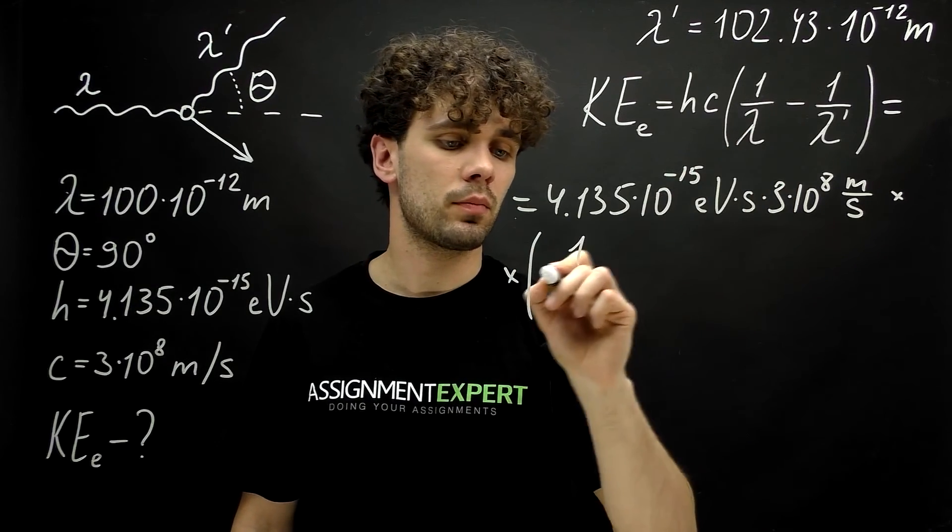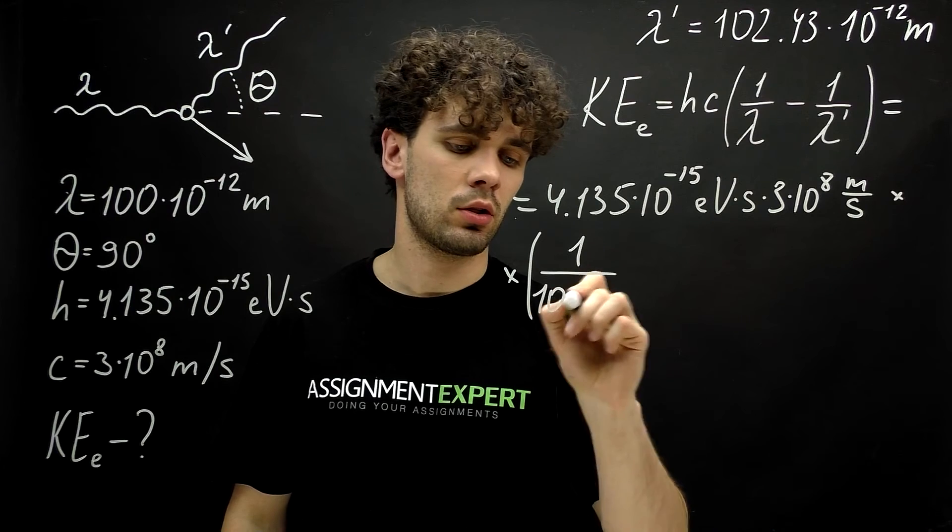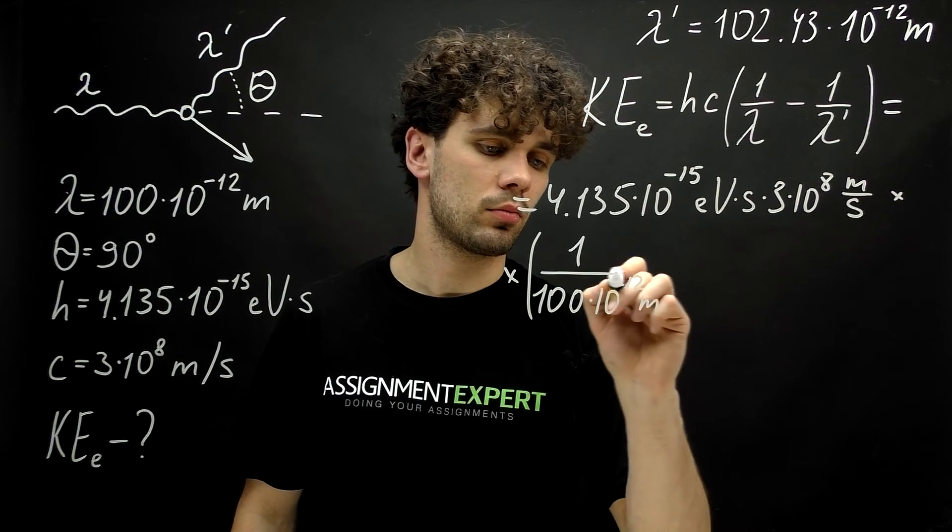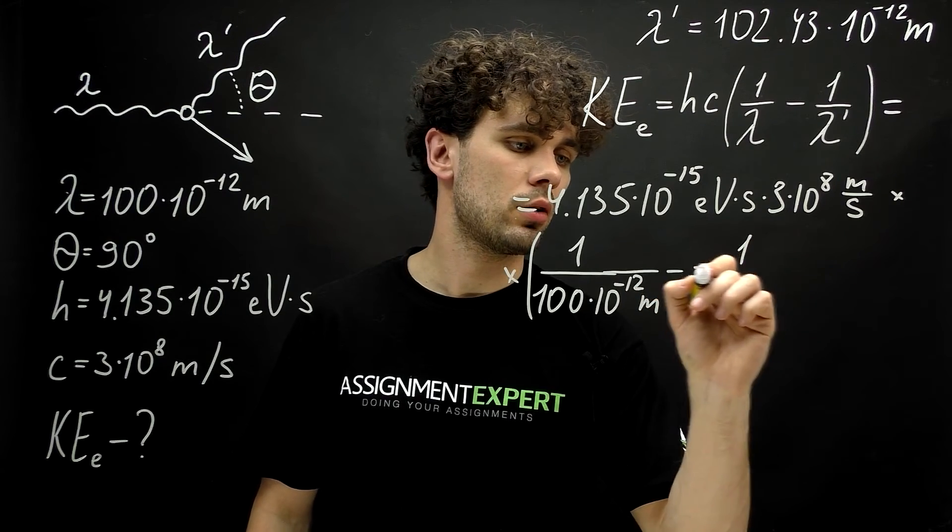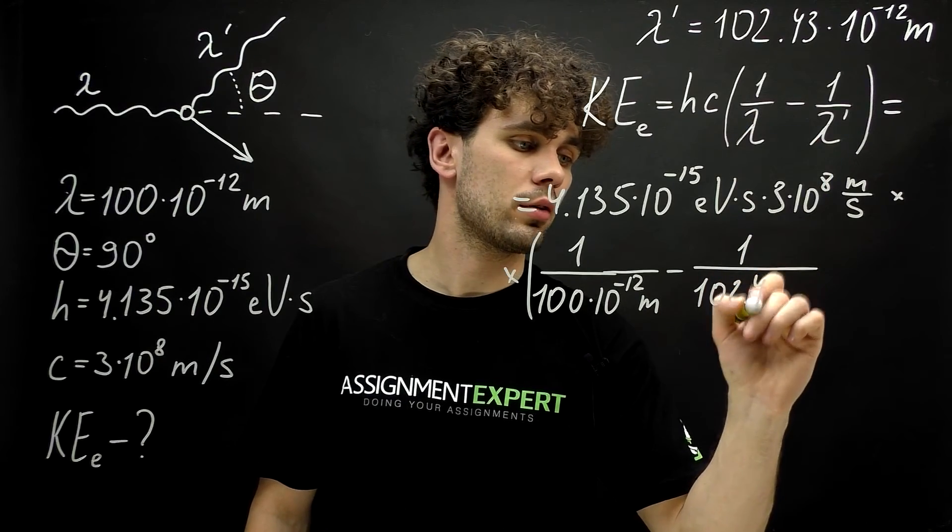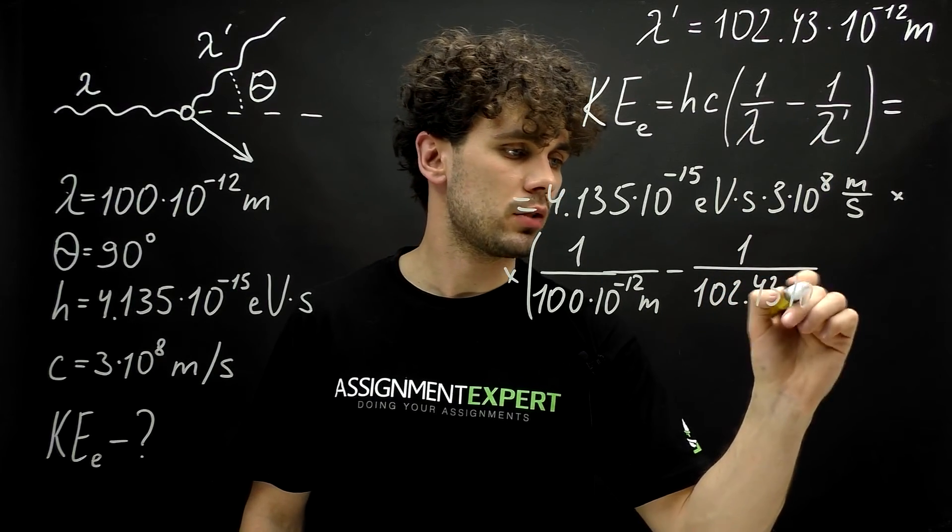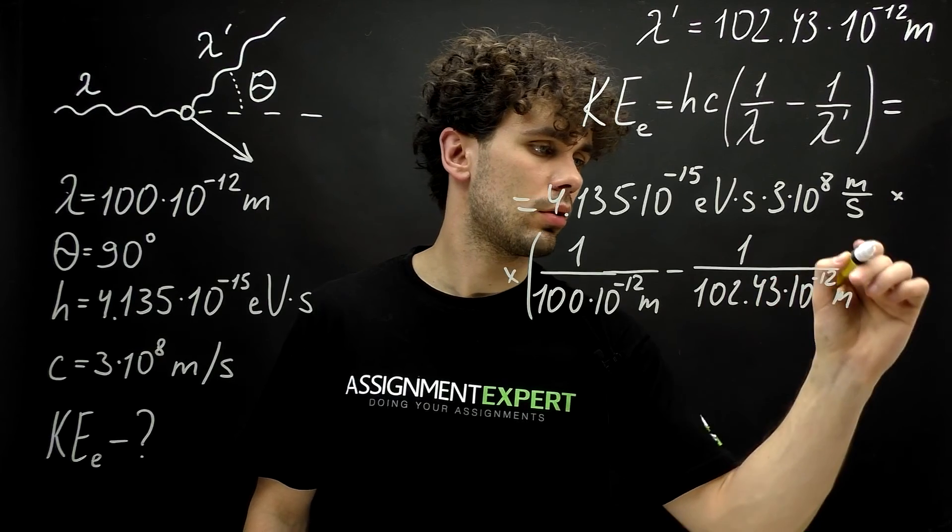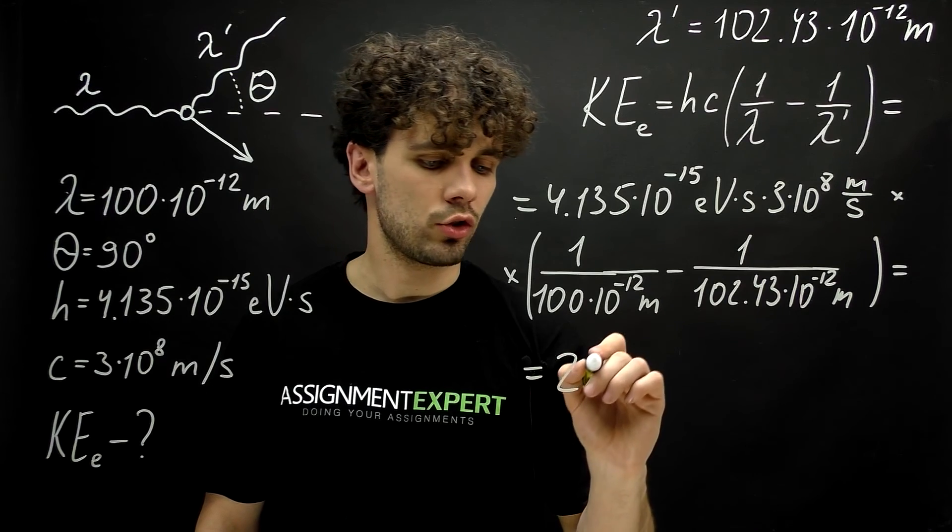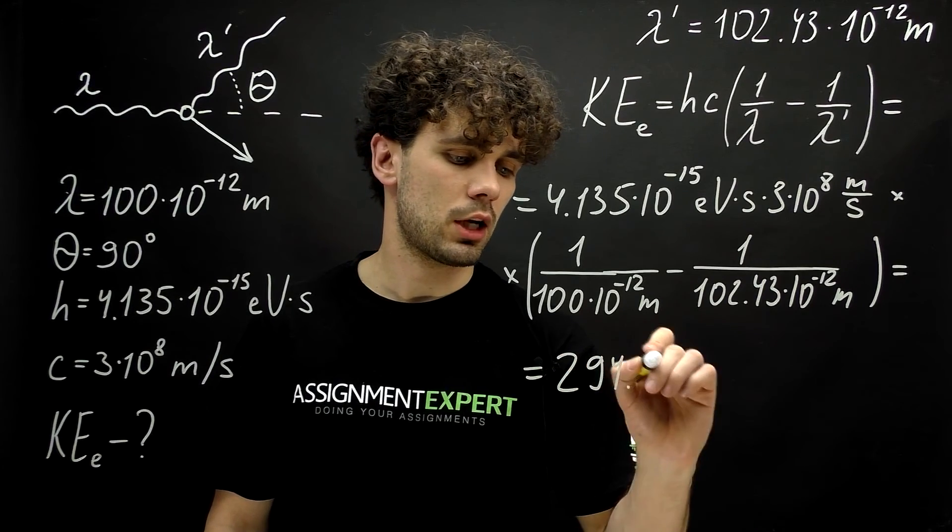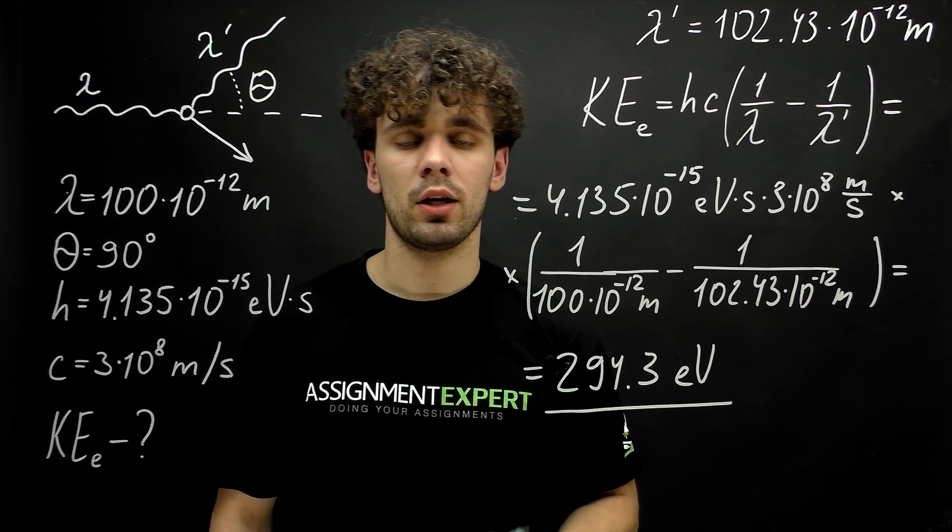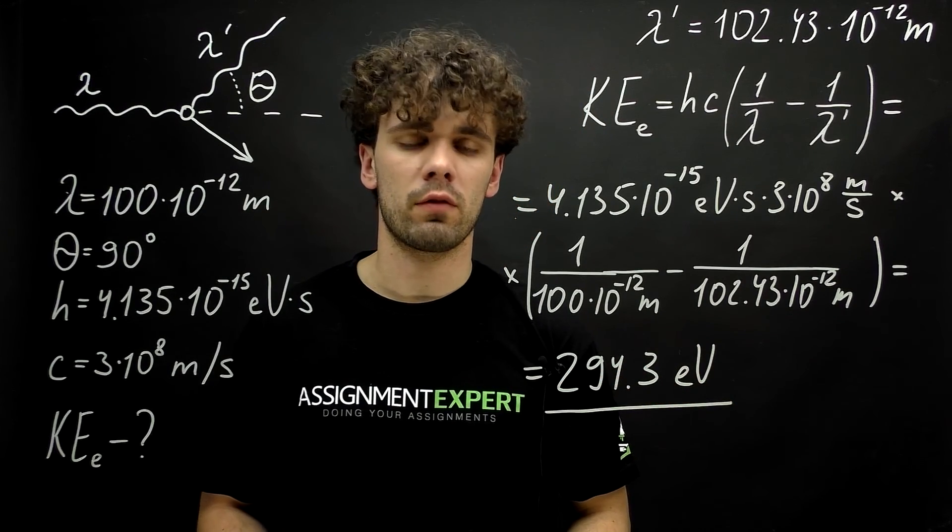Now, in braces we have 1 over 100 times 10 raised to the negative 12 meters minus 1 over 102.43 times 10 raised to the negative 12 meters. And this gives us 294.3 electron volts. And here we found the kinetic energy of the recoiling electron.